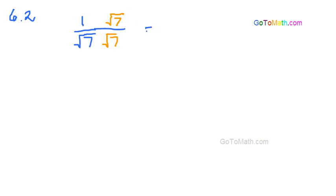Now what happens is we've got 1 times the square root of 7 over—and now remember, we can join these together all under one radical. So this is 7 times 7.